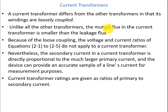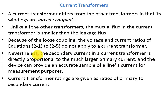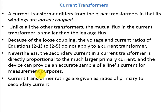Unlike all other transformers, the mutual flux in the current transformer is smaller than the leakage flux. Because of the loose coupling, the voltage and current ratio equations we have seen previously do not apply to the current transformer. Nevertheless, the secondary current is directly proportional to the much larger primary current, and the device can provide an accurate sample of the line's current for measurement purposes.